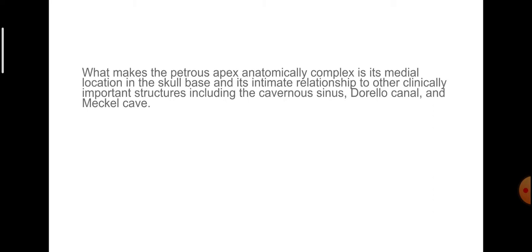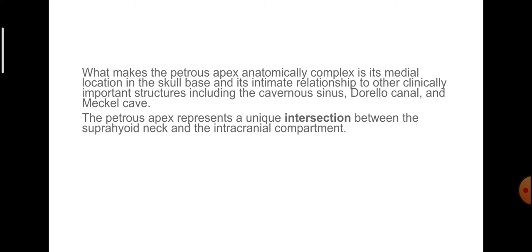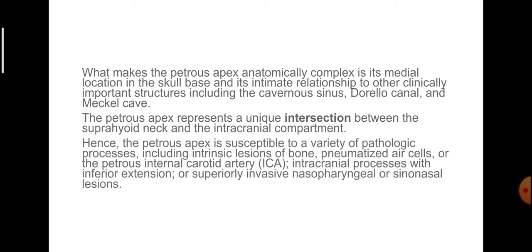What makes the petrous apex anatomically complex is its medial location in the skull base and its intimate relation to other clinically important structures including the cavernous sinus, Dorello's canal and Meckel's cave. The petrous apex represents a unique intersection between the suprahyoid neck and the intracranial compartment. Hence it is susceptible to a variety of pathologic processes including intrinsic lesions of bone, pneumatized air cells or the petrous internal carotid artery, intracranial processes with inferior extension, or superiorly invasive nasopharyngeal or sinonasal lesions.